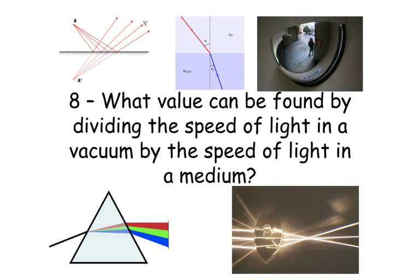Question number eight. What value can be found by dividing the speed of light in a vacuum by the speed of light in a medium?